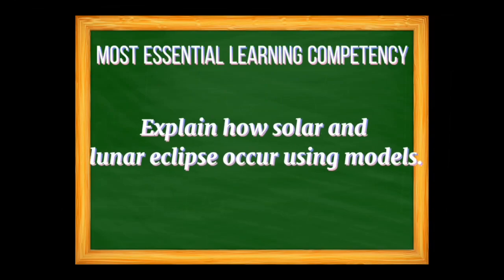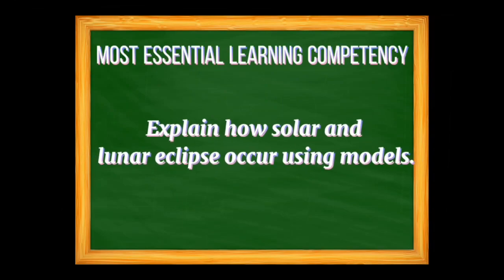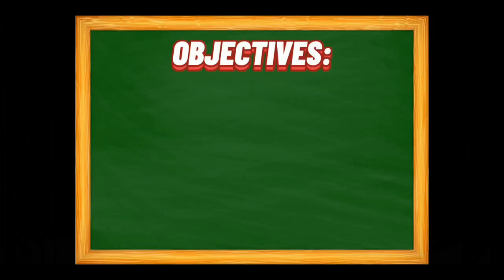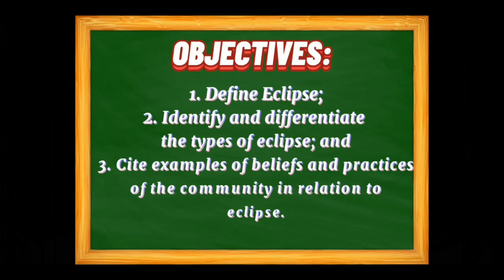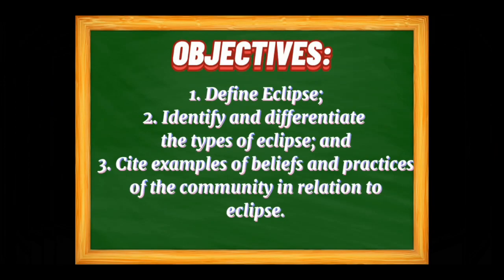For our most essential learning competency for today, we have: explain how solar and lunar eclipse occur using models. For our objectives, we have: define eclipse, identify and differentiate the types of eclipse, and cite examples of beliefs and practices in the community in relation to eclipse.